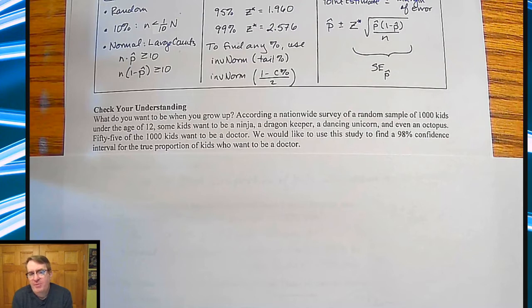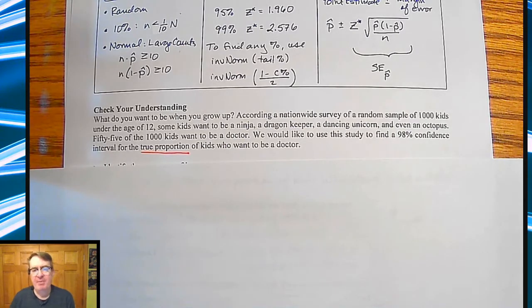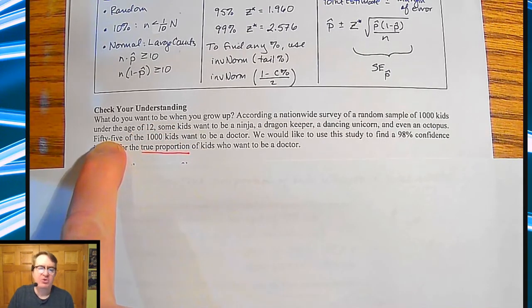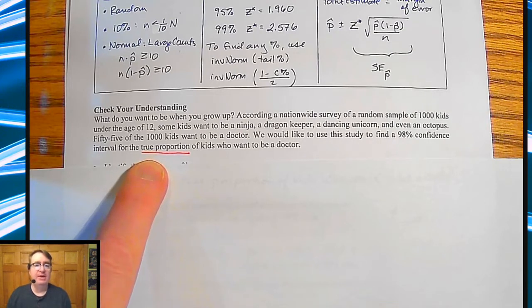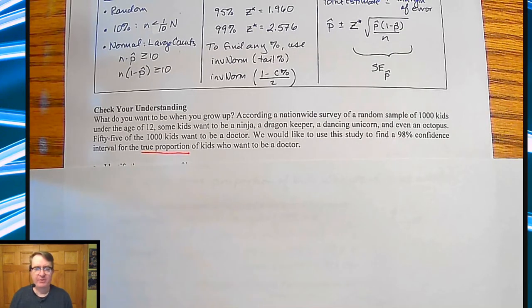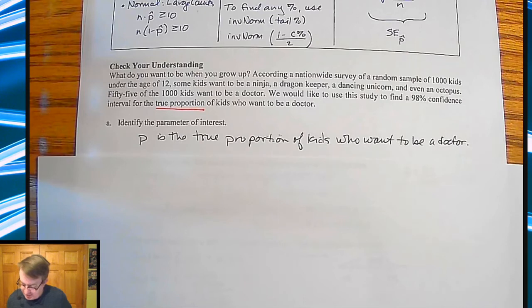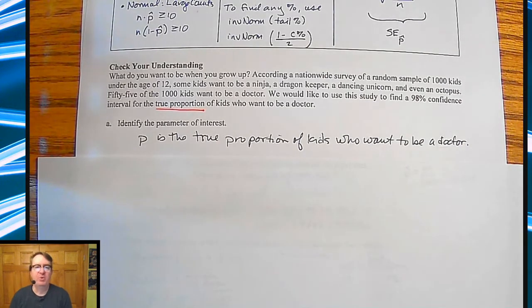Now, one thing that's important to remember on this is that you need to go through and answer what they're asking. Notice they're asking that it is a true proportion. So you need to do everything in terms of proportions. This type of problem, I often sometimes will see kids do it with just the 55 kids and do it with a mean, which we haven't talked about yet, but make sure that you're reading and answering the question that's being asked, not the answer to the question that you think is being asked. Critical reading is obviously important. Your English teacher did not lie to you. So parameter of interest, the parameter of interest is P is the true proportion of kids who want to be a doctor. That's what we're looking for.